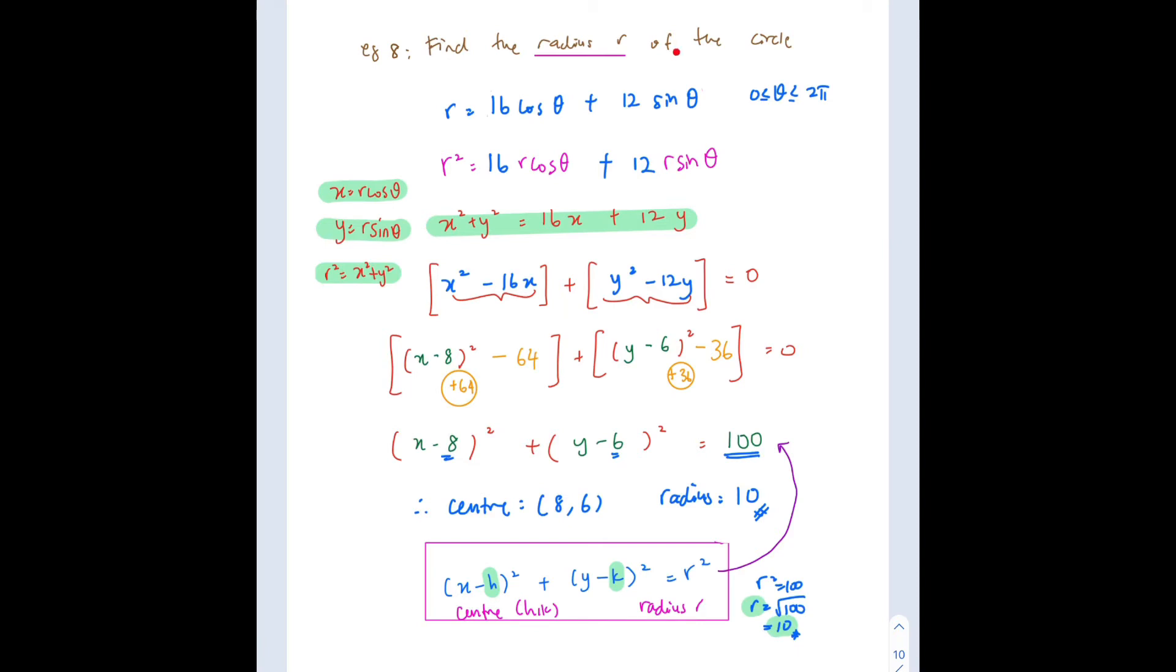Find the radius R of the circle. So this is the equation given. So actually this is a polar equation because you have R and theta. So the question asks us to find radius R of the circle. So here you need to know first what is the equation of circle. So this is the equation of circle where you have x minus h squared plus y minus k squared equal to R squared.